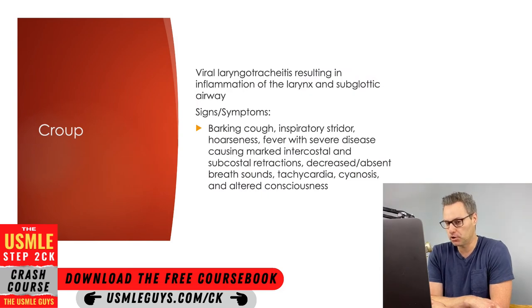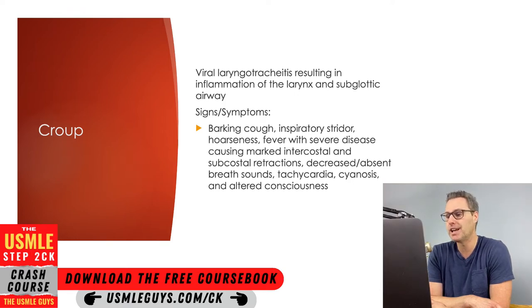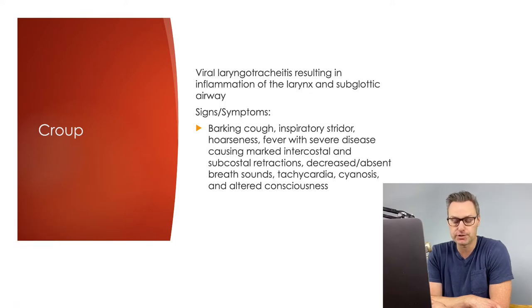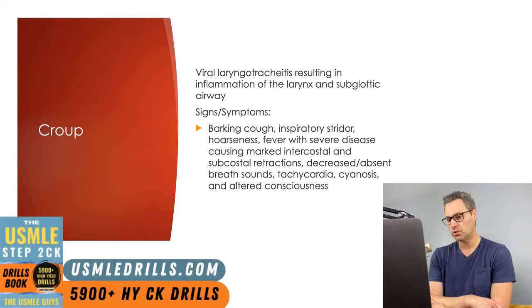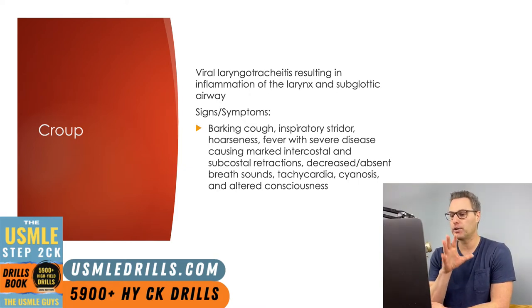First up, we have croup. Croup is a viral laryngotracheitis resulting in inflammation of the larynx and subglottic airway. This occurs most commonly in children ages six months to three years. The virus most commonly associated with croup is parainfluenza virus type 1, with the majority of cases occurring in the fall or early winter months.